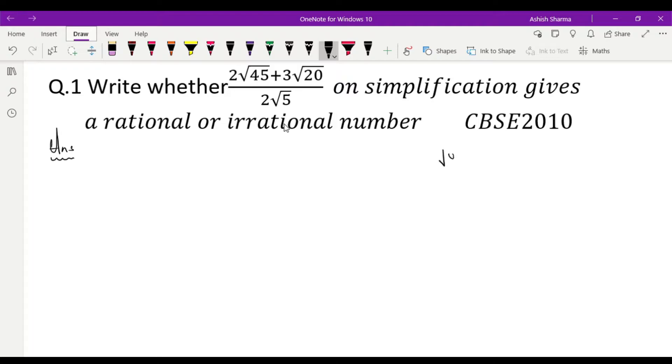You know that root 45 can be written as 5 into 3 into 3. Prime factorization: 3, 3's are 9, 5's are 45. 3 ka pair ban raha, 3 will come out. Yeh 3 root 5 banne wala hai simplification ke baad.